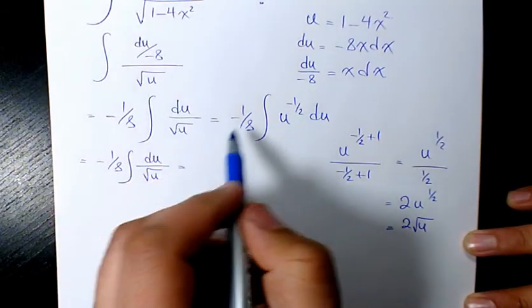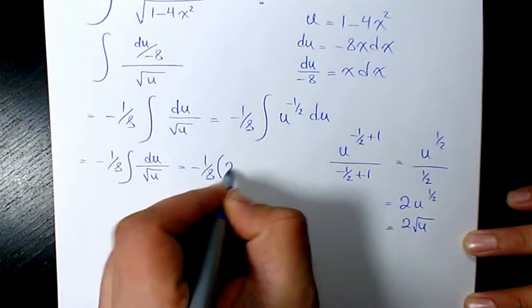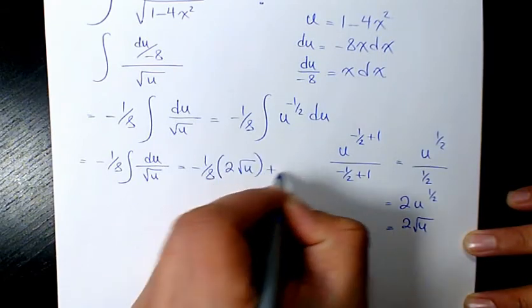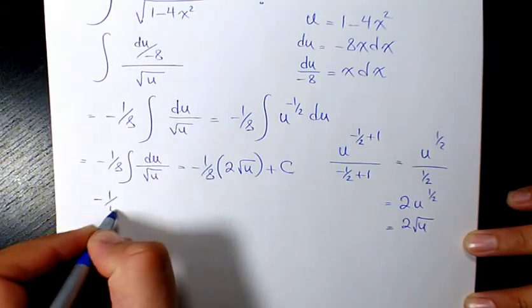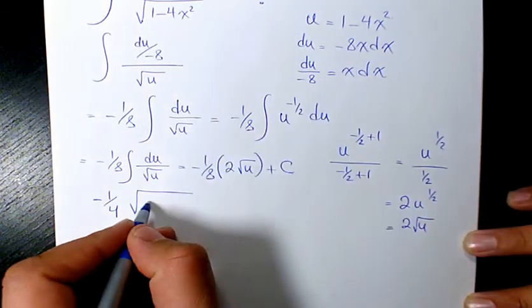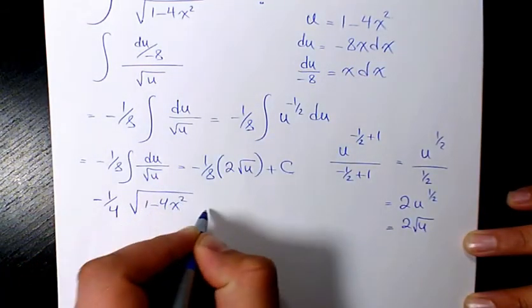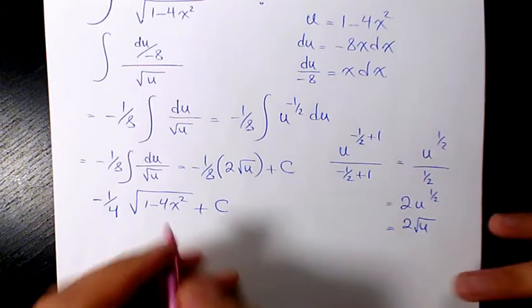It changed to negative 1 over 8 times 2 root u plus c. When you simplify it, it's going to be negative 1 over 4 square root of 1 minus 4x squared plus c. So that's going to be the final answer.